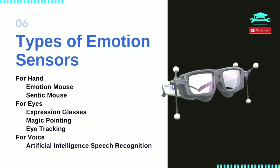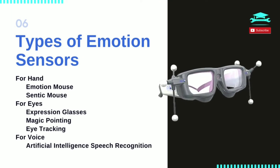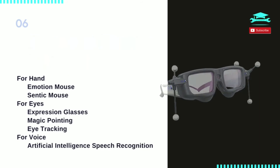Types of Emotion Sensors: The Emotion Mouse and Centic Mouse collect physiological data through sensors such as pressure sensor and heartbeat sensor present on the mouse. Expression glasses, magic pointing, and eye tracking methods are employed to perceive the physiological state of the user through monitoring and recording operators' movement of eyes. Artificial intelligence speech recognition collects data from the modulation or variation of pitch, speed, and other factors of the voice that are influenced by emotional state.